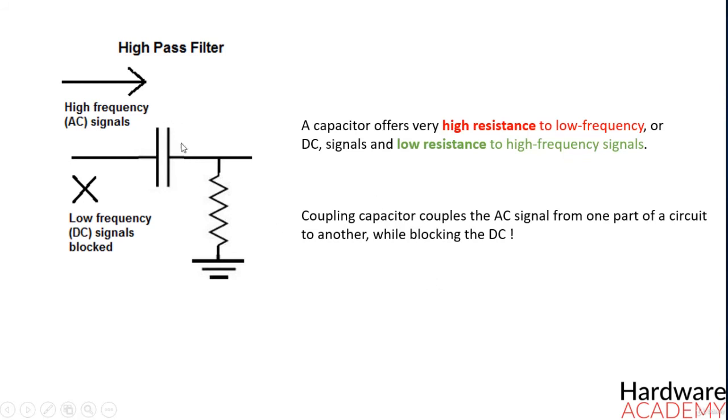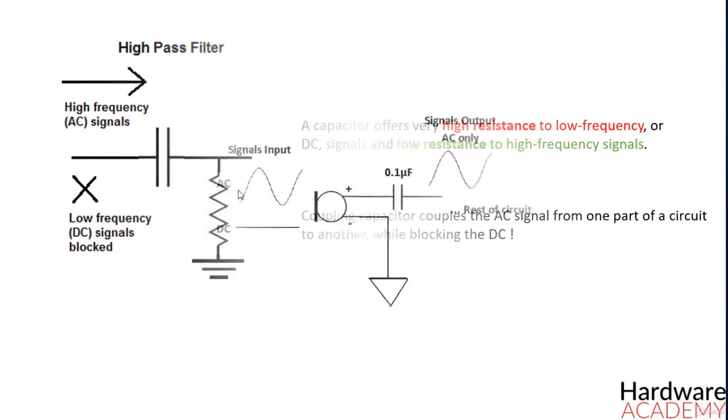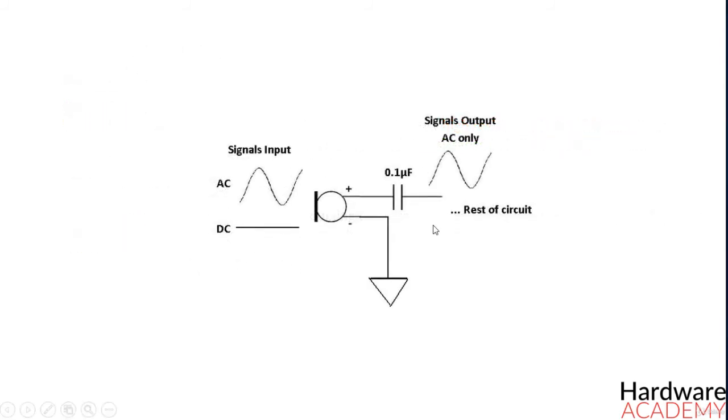High-pass filters are very common and are used in many types of circuit setups. One such circuit in which they are used is in microphone circuits. Microphones are devices which need both DC and AC signals in order to work.